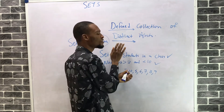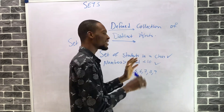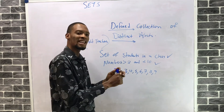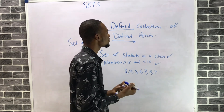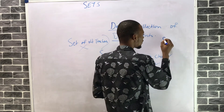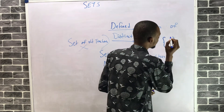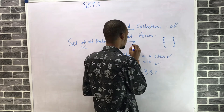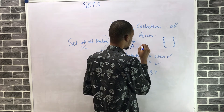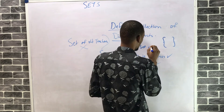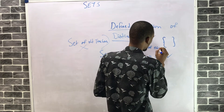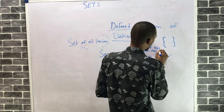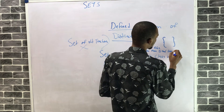A set is a defined collection of objects, and the objects must be different — they must be distinct. No object is repeated; each object stands on its own. A set is represented by curly brackets, and it is denoted with a capital letter. So you can write: A equals the set of numbers greater than 5 and less than 10.